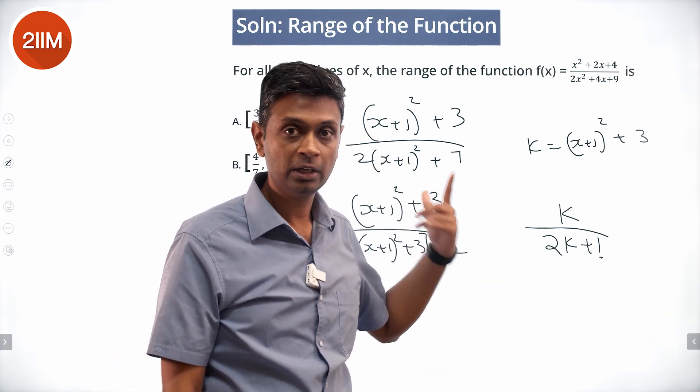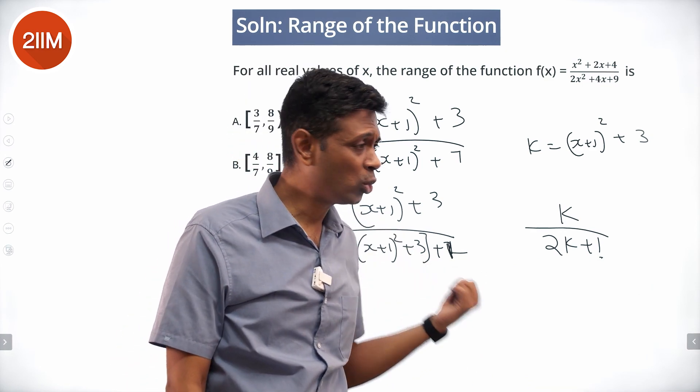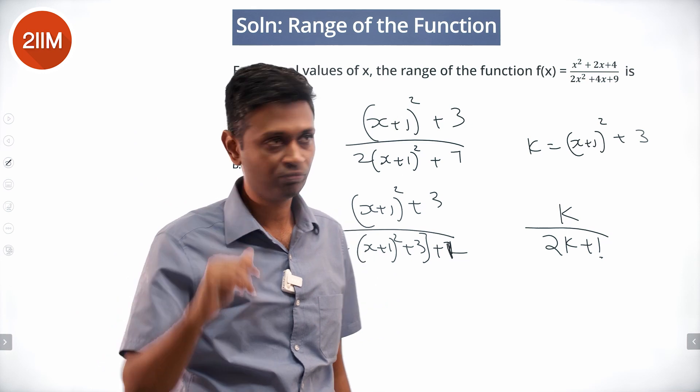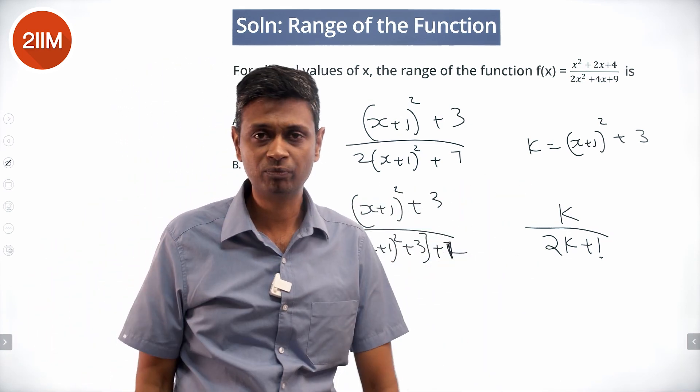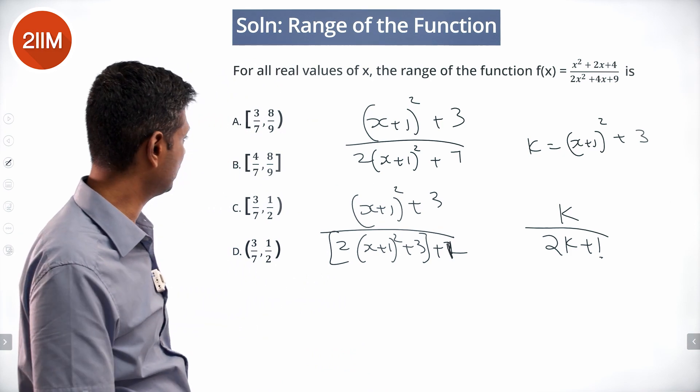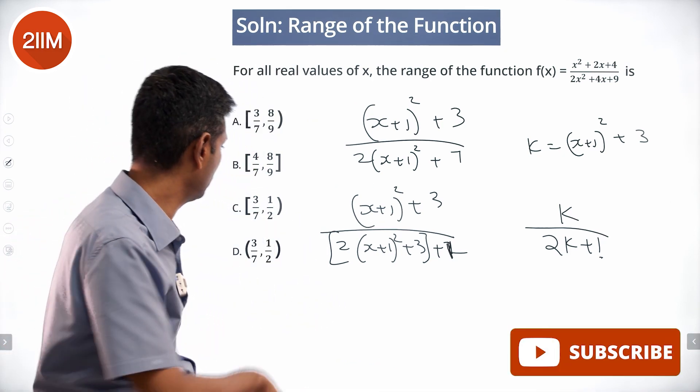We put k as a billion. Billion by 2 billion plus 1 is half, practically half. And so this number will go to half when k is very high. What is the smallest value it can take? In case 3, 3 by 7. Smallest it can take is 3 by 7. Largest it can take is 1 by 2. It cannot quite be 1 by 2. This is the answer.